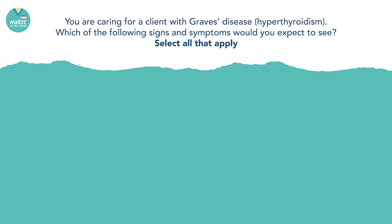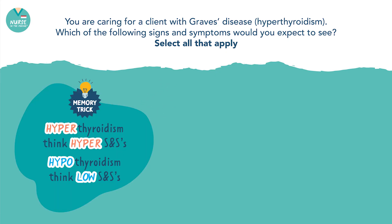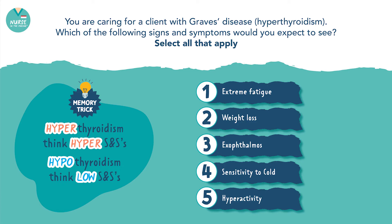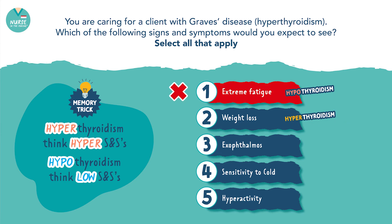Now let's do a practice question to test the knowledge we just learned. You are caring for a client with Graves disease — hyperthyroidism. Which of the following signs and symptoms would you expect to see? Select all that apply. Extreme fatigue — this is a symptom of hypothyroidism, not hyperthyroidism. Weight loss — clients with hyperthyroidism have a lot of energy and increased metabolism, so they tend to lose weight despite having an increased appetite.